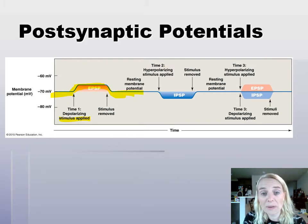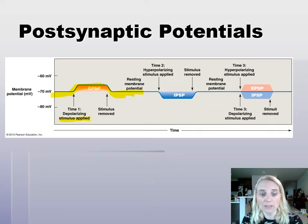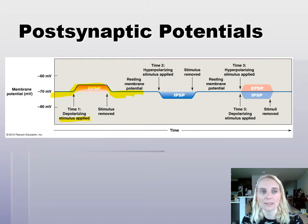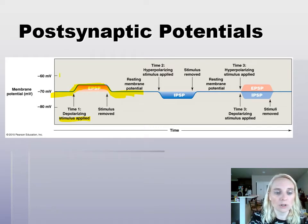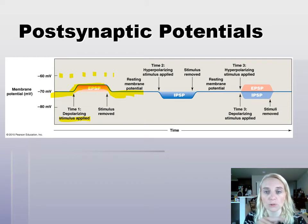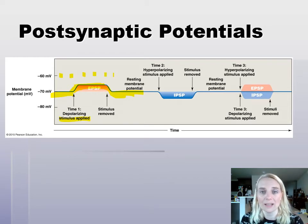It's basically a graded potential. But if it's a graded potential on that postsynaptic cell — a depolarizing graded potential — we call that an EPSP, an excitatory postsynaptic potential, because we're getting it closer to threshold. Threshold was negative 60 millivolts. The closer we get to threshold, the easier it is — the more likely that cell is going to fire an action potential.